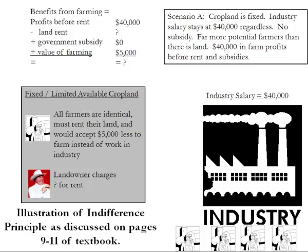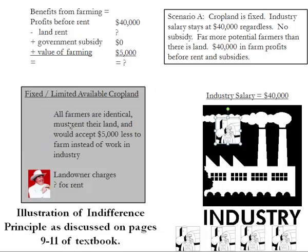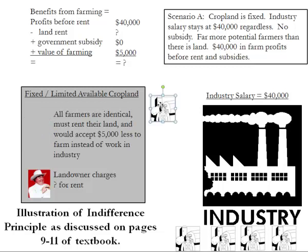The first scenario we start with in the textbook is one where we have Rent the farmer. Rent is someone who could work in the industry or she could work farming. The area of this box right here is cropland. Rent could work at either one, but she prefers being a farmer. In particular, she would accept $5,000 less in pay to be able to farm instead of working in industry.